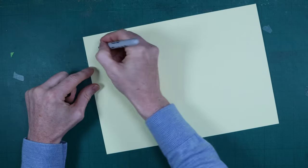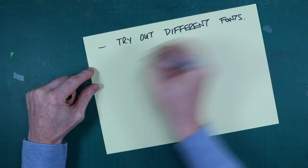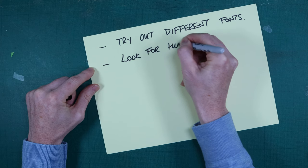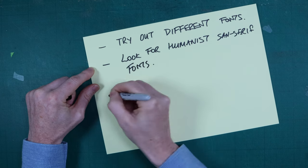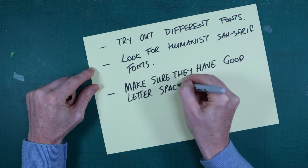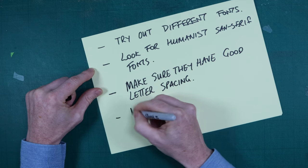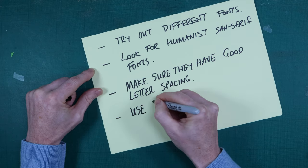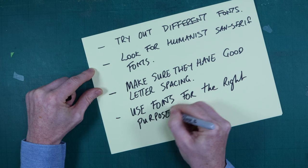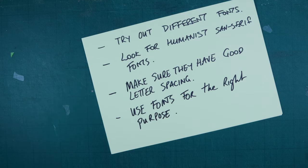In summary, try out a few fonts to see what works for your scenario. Look for sans serif fonts that are humanist in type, make sure they have good letter spacing, and use fonts for the situations they are designed for. Is there anything else you would add when considering fonts for your next web project? I hope you enjoyed the video. Next video will be looking at layout and how font merges with layout, image and contrast. Thanks for watching and see you in the next video.